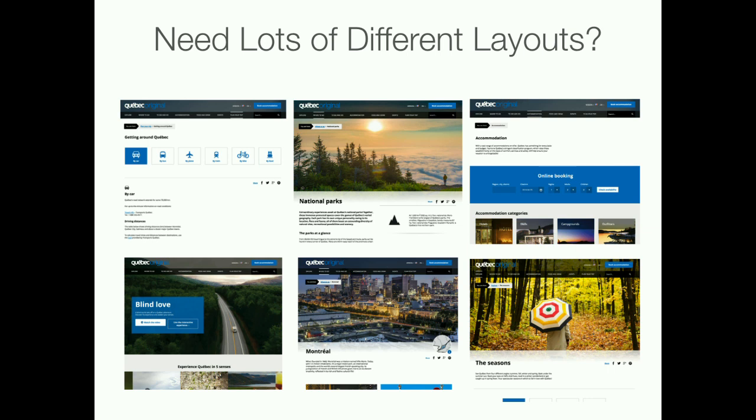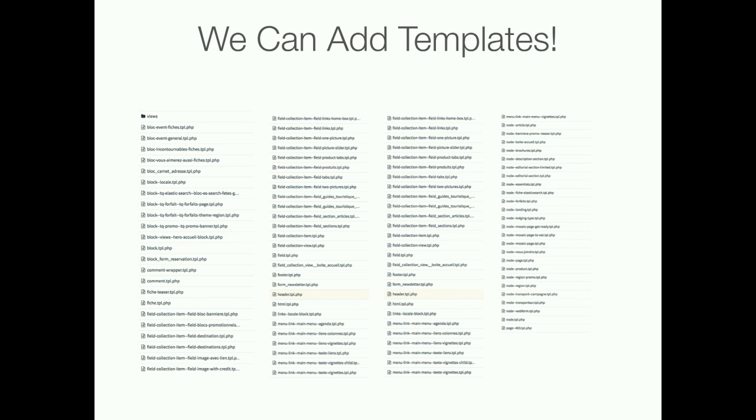When we get handed a design with a lot of different layouts, we think: we have templates we can use to override the markup, and if we don't have enough, we can use template suggestions, and we can even add additional template suggestions in our theme. This is how you wind up with a theme that has hundreds of templates. And Drupal complains when modules are out of date with an error message, but there's no error message when you've added 200 templates to your theme. Maybe there should be.